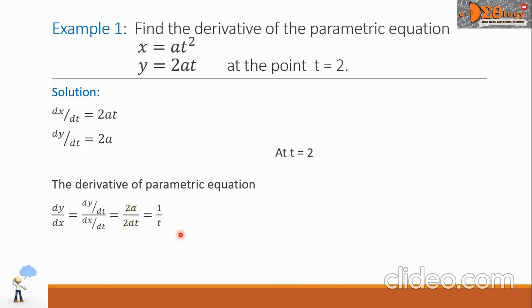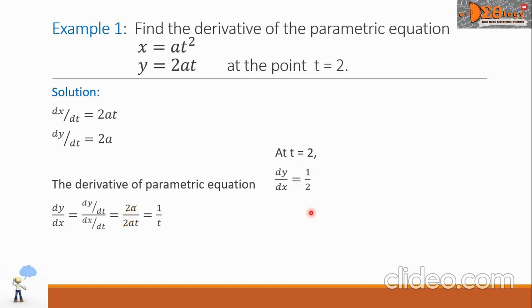At t equals 2, we substitute the value of t as 2. So dy over dx is equal to 1 half. This is our final answer.